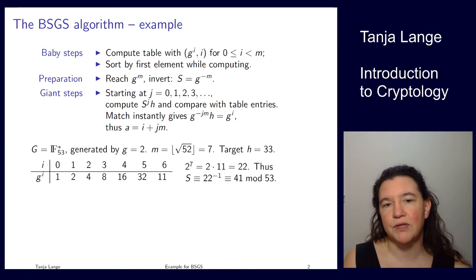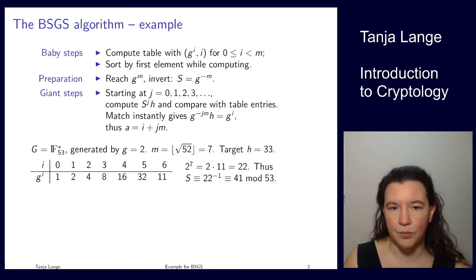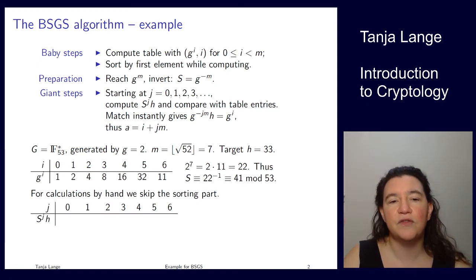There's no reduction mod 53 kicking in, and then I use the extended Euclidean algorithm to compute the inverse of 22 mod 53, which gives me 41. In principle, as I said, there would have been a sorting step.